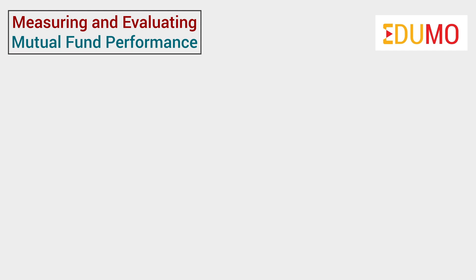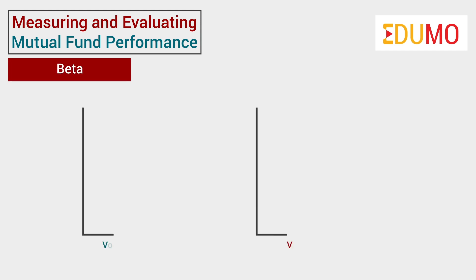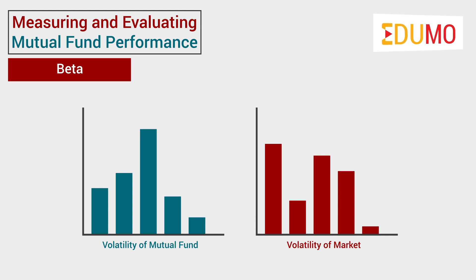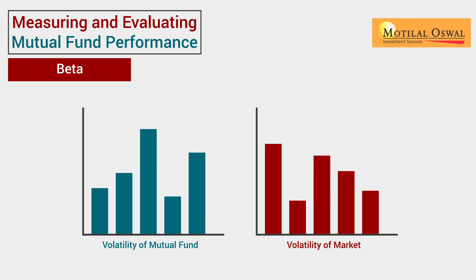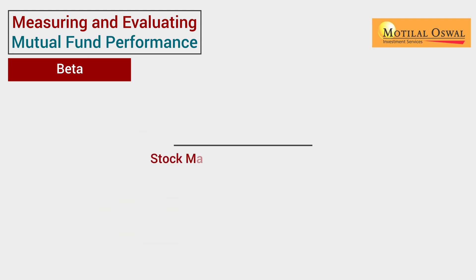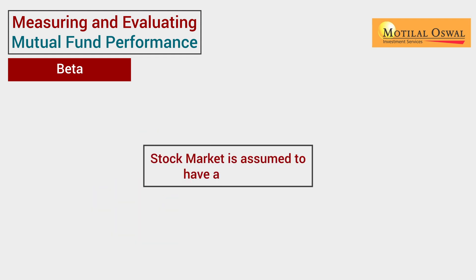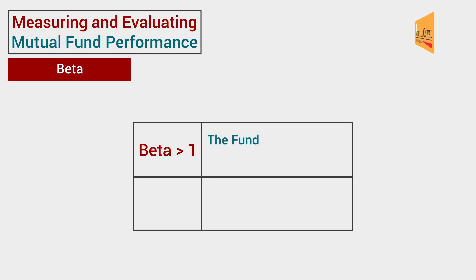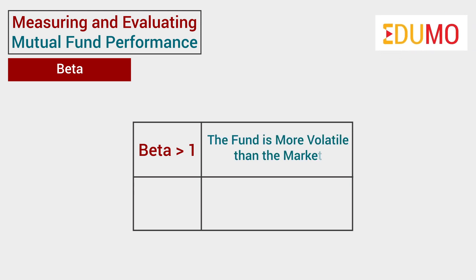Next, let us discuss the beta. Instead of excess returns, the beta is used to compare the volatility of a mutual fund with the volatility of the market in general. The stock market is assumed to have a beta of 1. In comparison to this, if a fund has a beta higher than 1, it shows that the fund is more volatile than the market. On the other hand, a beta below 1 shows that the fund is less volatile than the market.